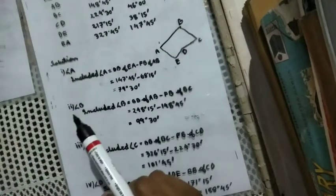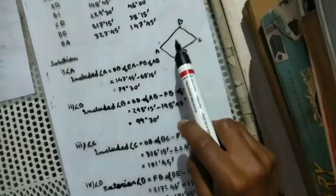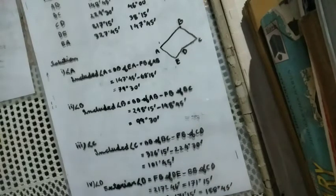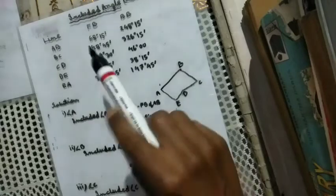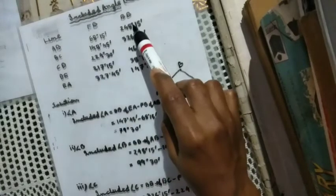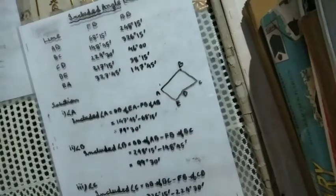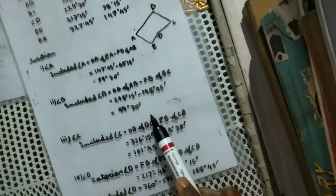Next I am angle B, angle B to I am included in the angle. I am going to give you back bearing of AB and forward bearing of BC. So here minus squared I am going to give you 99°30'.